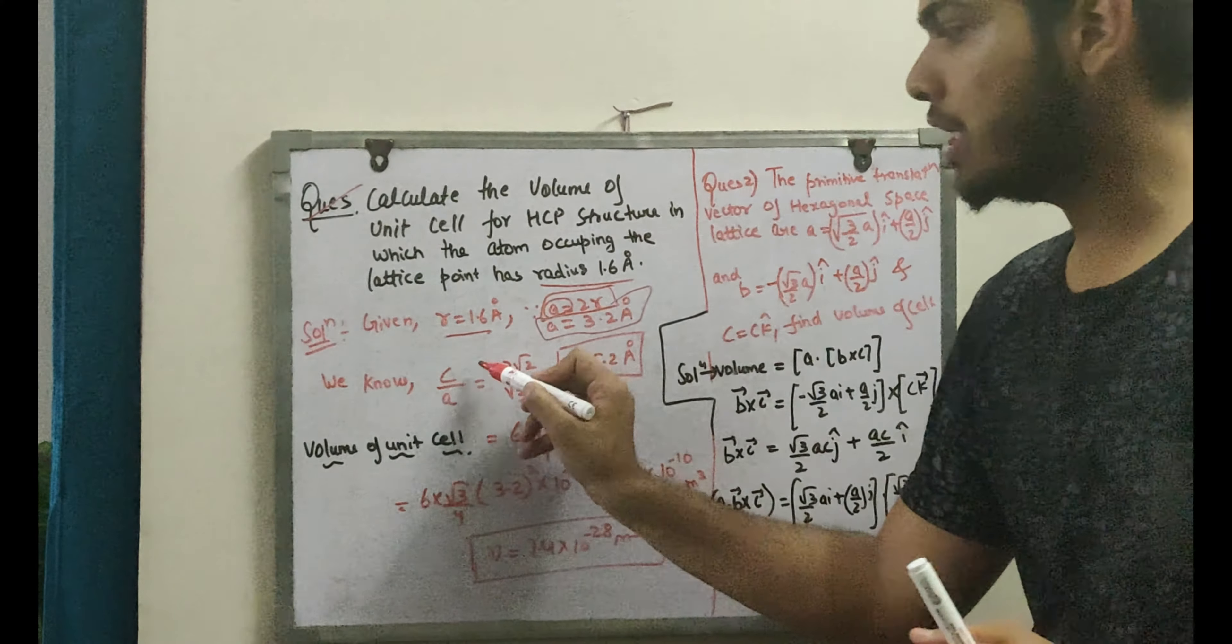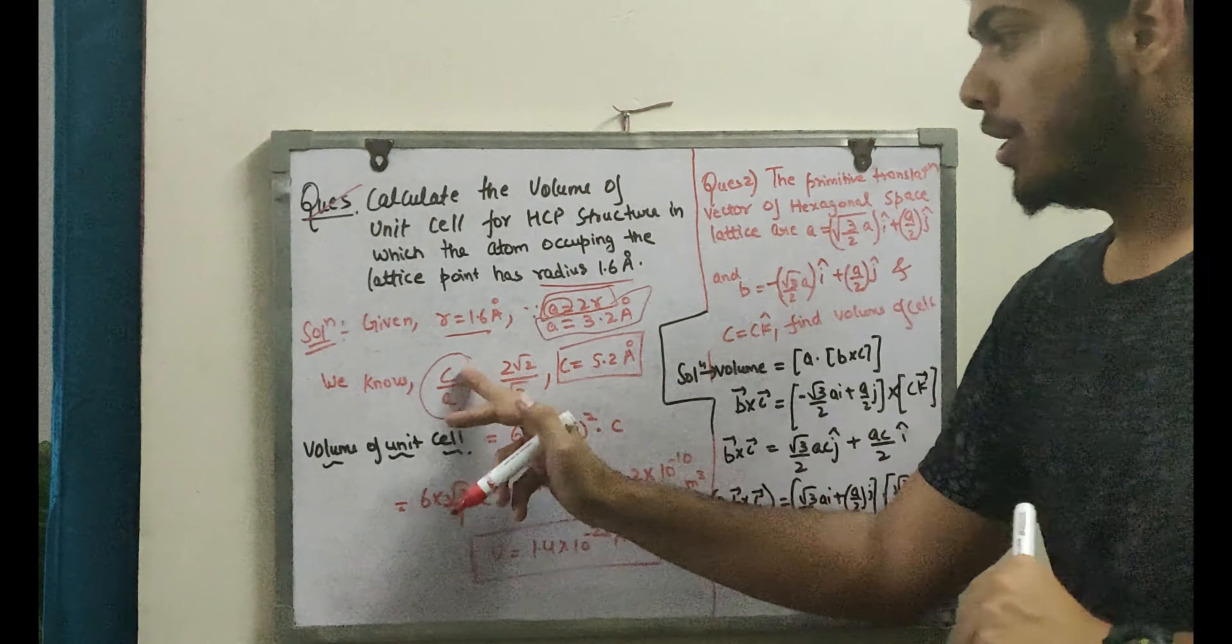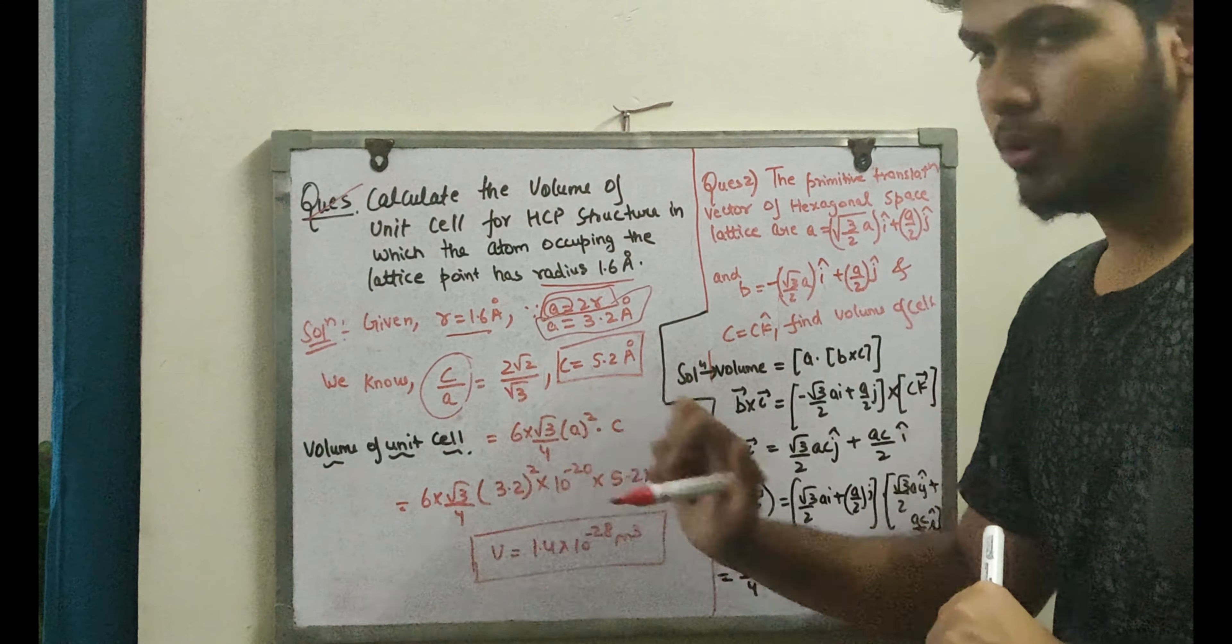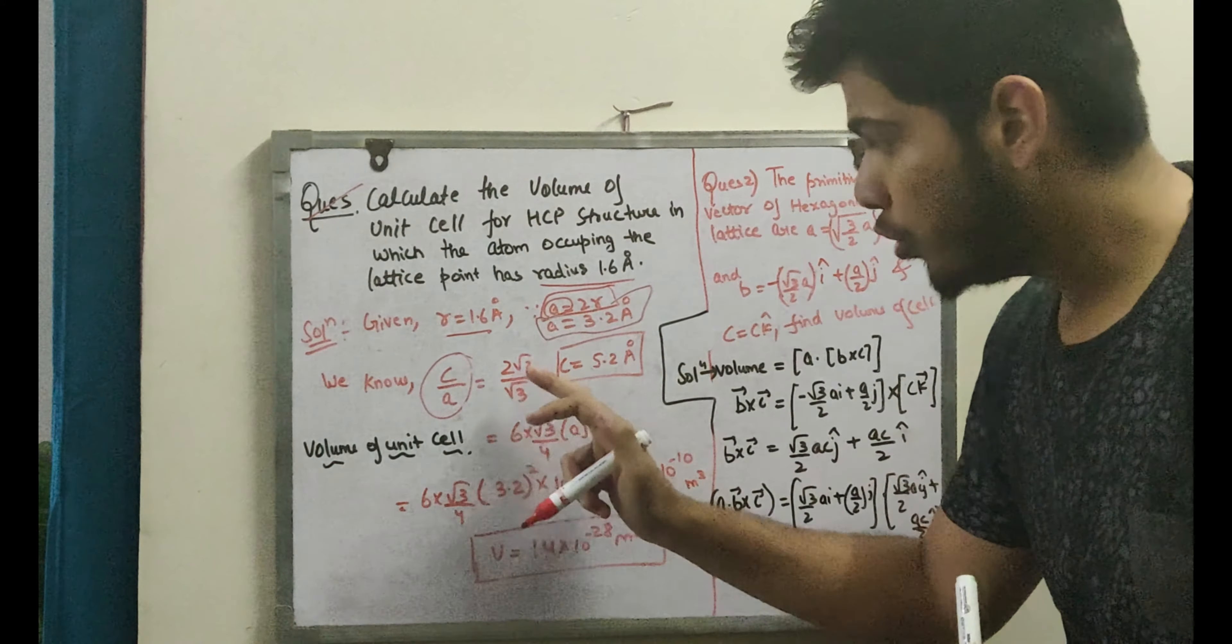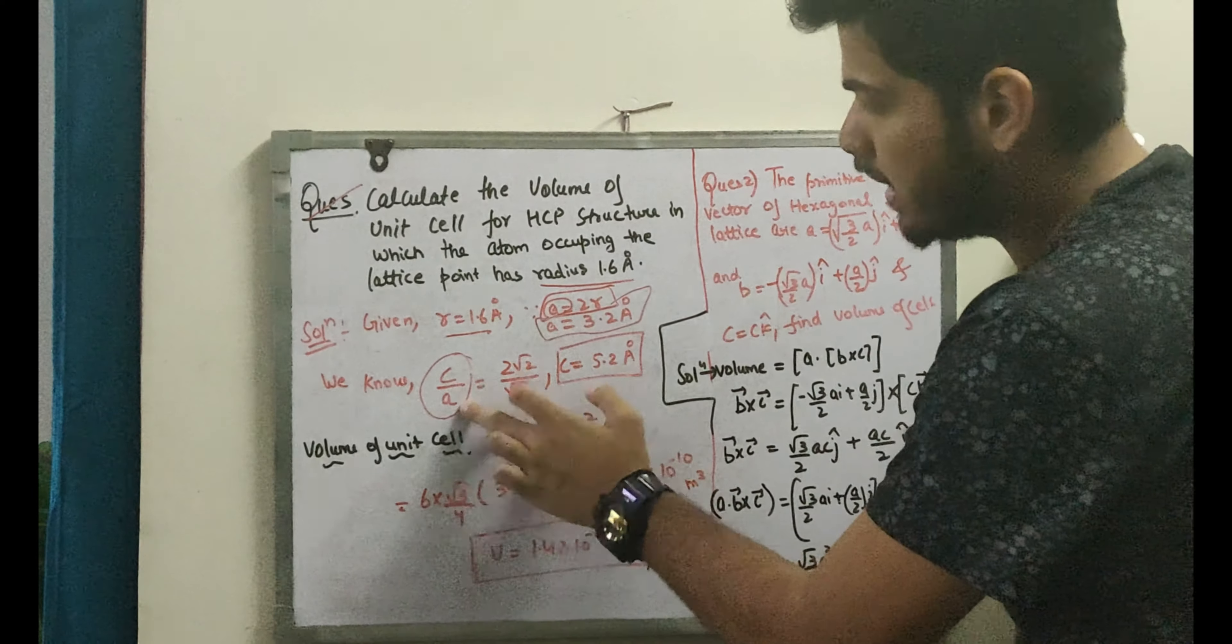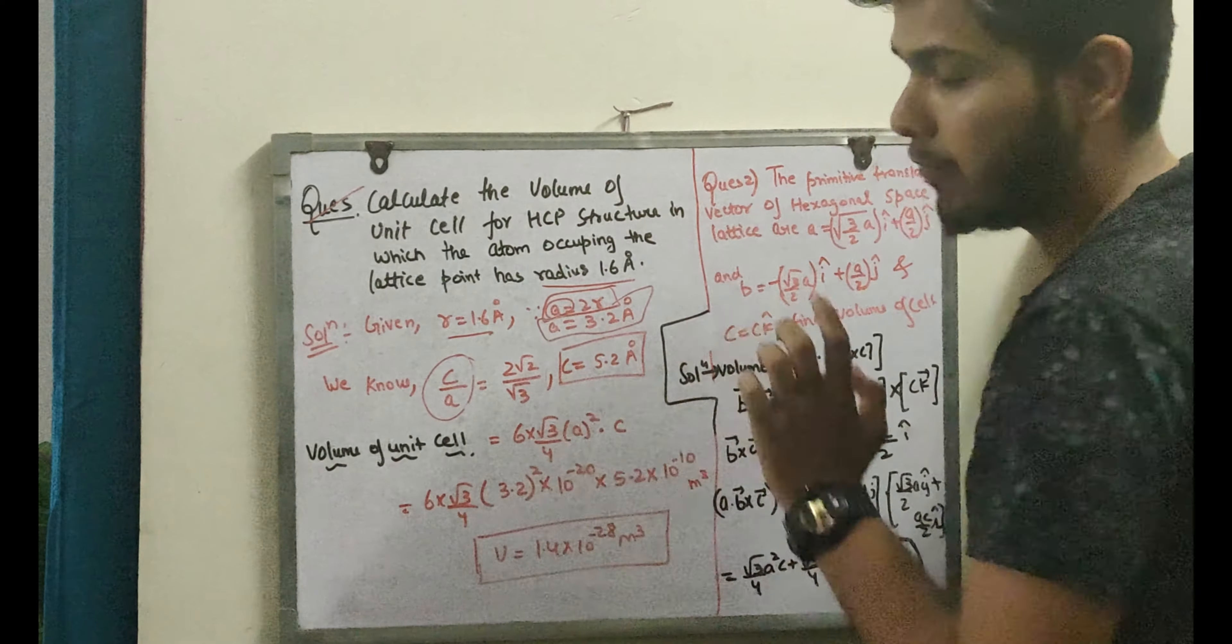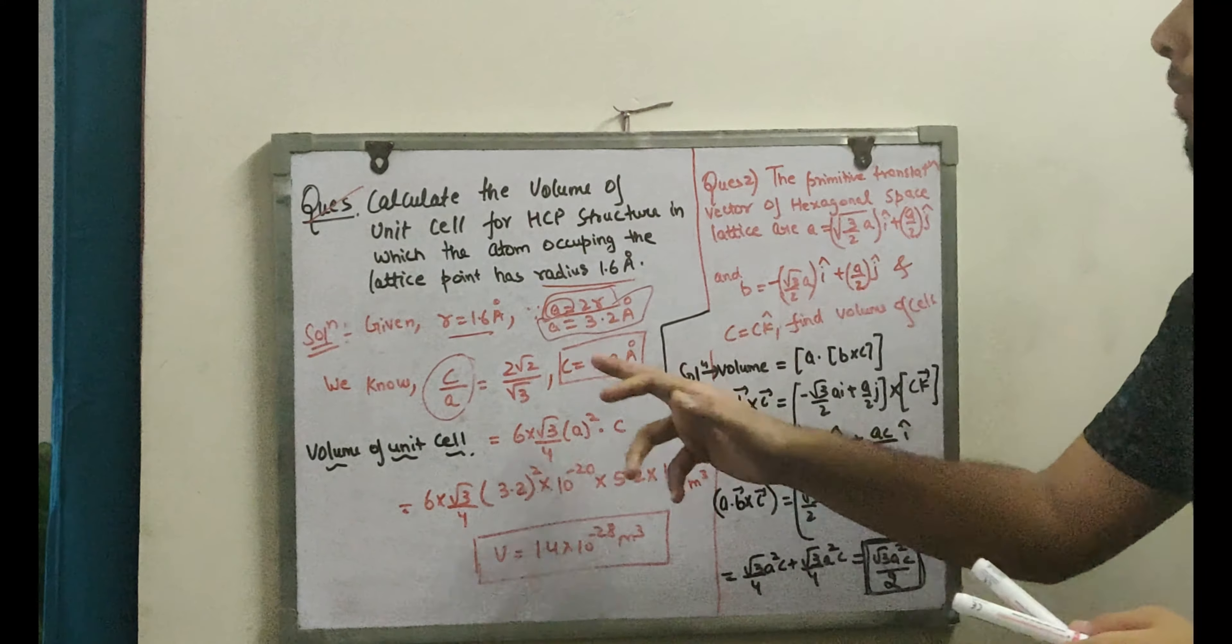I have radius, I have edge length A. Now I know the relation of C and A. We saw this in the last video: C over A equals 2 root 2 by root 3. From this I will get C value, because I already know A. I have removed R and I will get C value, that is 5.2 angstrom.